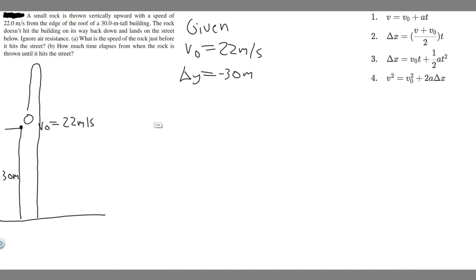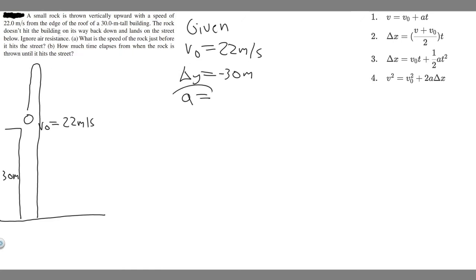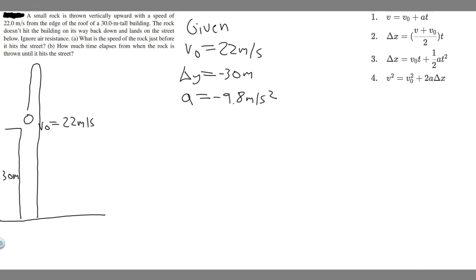Whenever you do a free fall problem like this, ignoring air resistance, you assume the acceleration is minus 9.8 meters per second squared — that's the force of gravity acting on the rock. Now for Part A, we're finding the speed of the rock just before it hits the ground, which is the final velocity v. So v equals question mark because that's what we're finding.